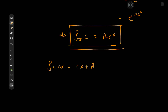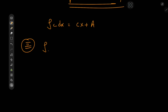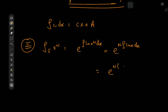Now what about a power rule? The product integral of x^n equals e to the integral of log(x^n) dx, which is e to n times the integral of log(x) dx. Evaluating using integration by parts gives us e to the n times (x log x − x), plus a constant of integration c. That is quite a surprising result.